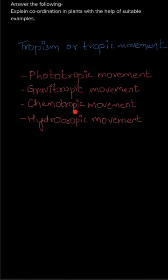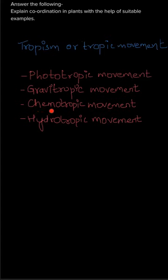Then we have chemotropic movement, which is the movement or growth of a plant part in response to a chemical. For example, the growth of the pollen tube towards the ovule — the ovary releases a chemical, usually a sugar substance, so the pollen grains move along the pollen tube towards the ovule for fertilization. Here the stimulus is the chemical, making this an example of chemotropic movement.